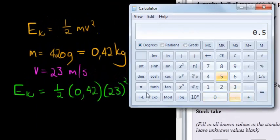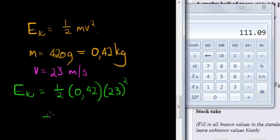We get 0.5, that's half, times 0.42 times 23 squared is equal to 111. So it's equal to 111.09 joules. That's the amount of kinetic energy it has.